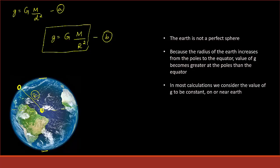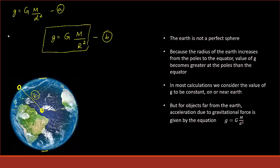In most calculations we consider g to be constant since we are all on the same planet and gravitation is nearly the same at most points. However, for an object far from earth — like an asteroid light years away — we cannot use r as the distance, so we must go back to Equation A. Equation A is used for objects far from earth; Equation B is used for objects near or on the earth's surface.